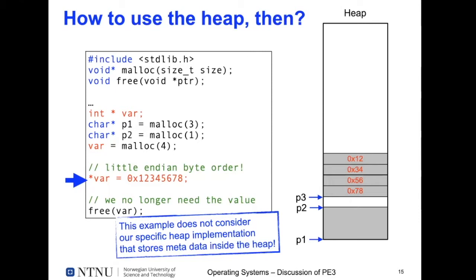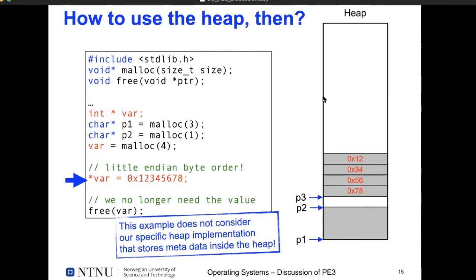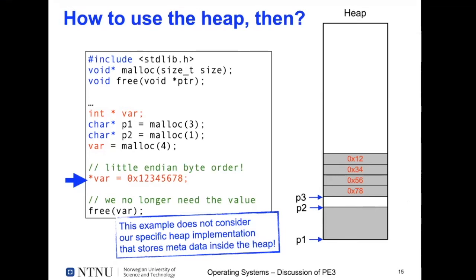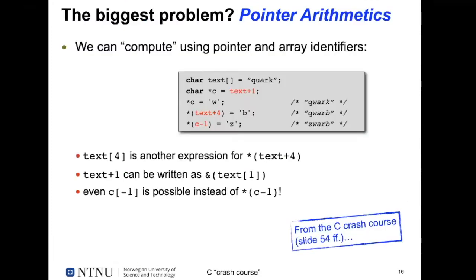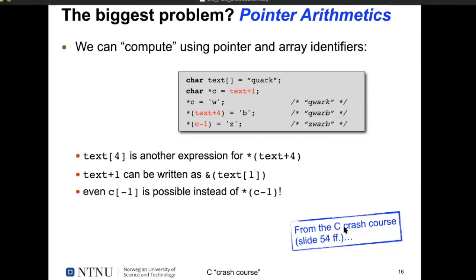This example is simplified and doesn't consider the metadata needed to administer the heap — information about which blocks are free. The biggest problem many students had was pointer arithmetic in C. We gave a hint to slides 54 and following in the C crash course. We know array notation in C is equivalent to pointer notation. For character arrays, a character is 1 byte, so pointer arithmetic works by simply adding byte offsets.